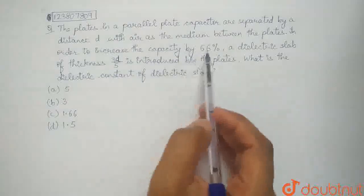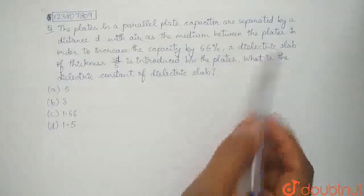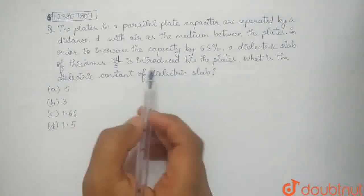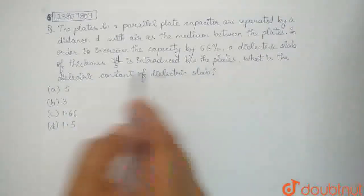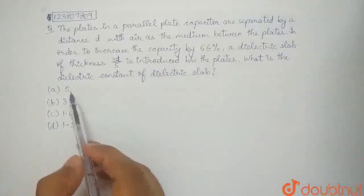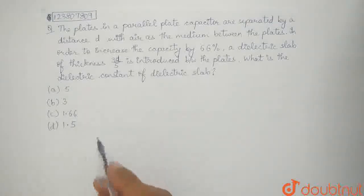In order to increase the capacity by 66%, a dielectric slab of thickness 3d by 5 is introduced between the plates. What is the dielectric constant of the dielectric slab? And the options are 5, 3, 1.66, and 1.5.